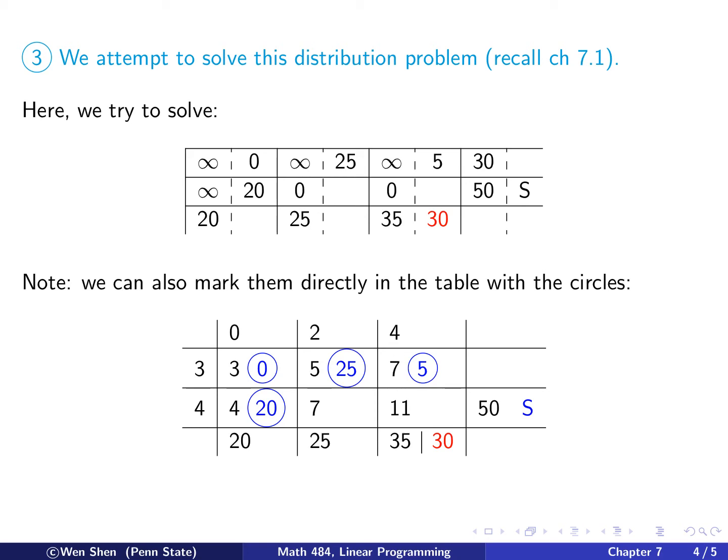We discussed the solution here in this tabular form, because this would be the same form as for chapter 7.1 when we talked about the distribution problem. But it's a bit annoying to have to rewrite a tabular for it. And remember, in the previous page, we marked in the tabular of the dual problem with big circles. So we can also mark everything there directly inside the circle. We fill in 0 in this circle, 25 in this circle, 5 here, and then 20 in this circle. And then we mark the S here to show the surplus, and we mark red 30 here to show that there's unmet demand. From now on, we will just use this tabular form.